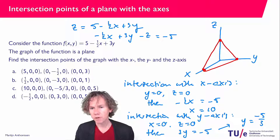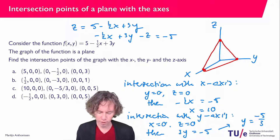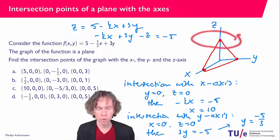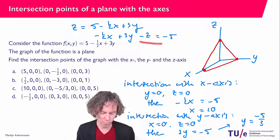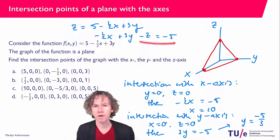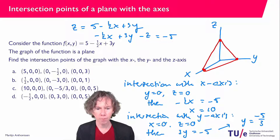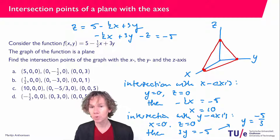To find the intersection with the z axis, we put x equal to zero and y equal to zero. That gives us the equation minus z equals minus five, so z equals five. The intersection point is zero, zero, five.